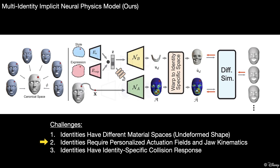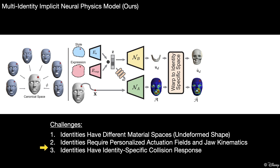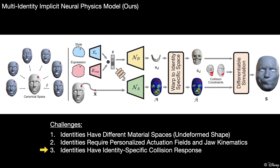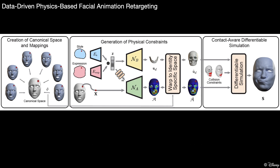For the second challenge, we obtain personalized actuation fields and gel movements by introducing a learned style code in addition to a given expression code. These codes are used to obtain physical constraints in the canonical space, which are mapped back to the identity-specific space before simulation. Finally, we incorporate a robust contact model into our simulation framework, allowing us to synthesize identity-specific collision response. This leads to our final network architecture.